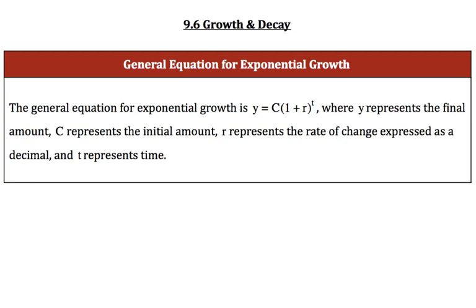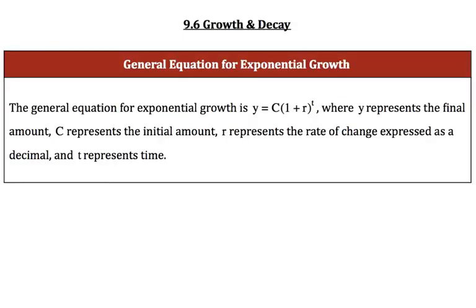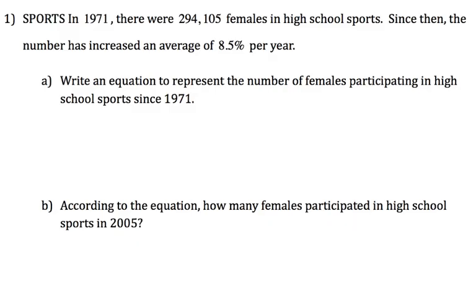C represents the initial or starting amount. R represents the rate of change expressed as a decimal. And t is time. With this labeled, other than the 1, everything's been pretty much tagged. Let's see if we can make more sense of this formula in action.